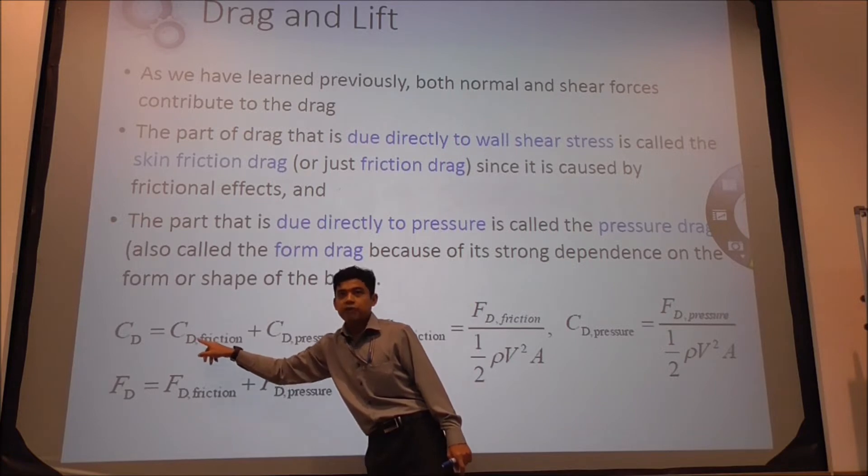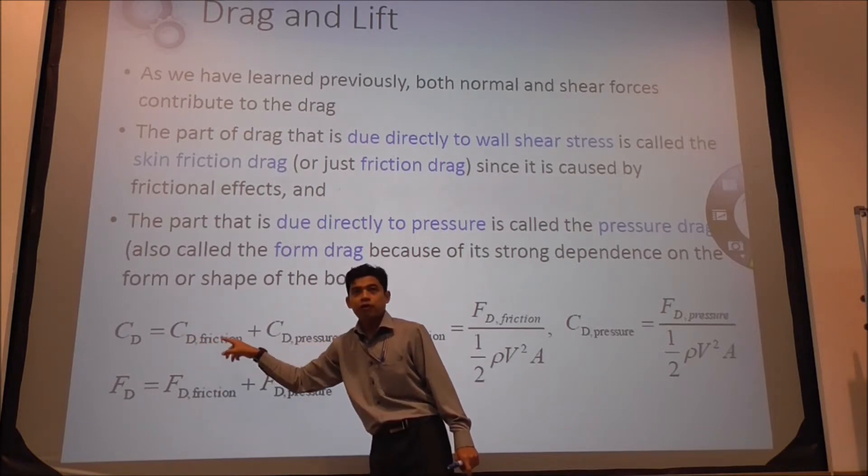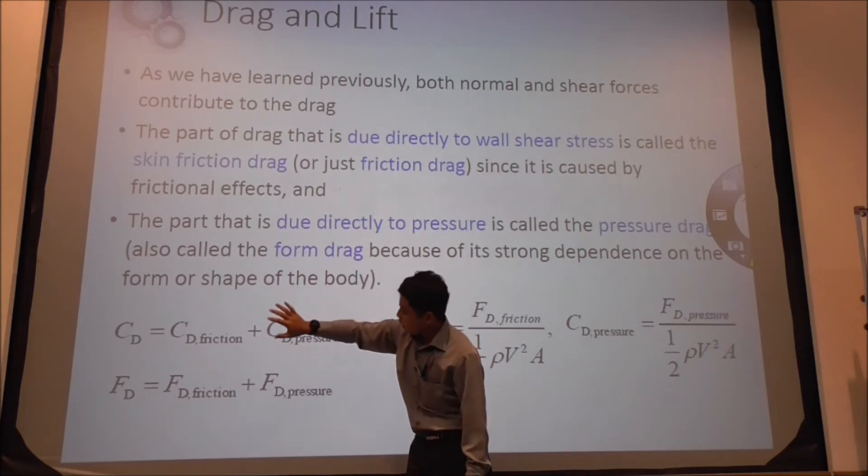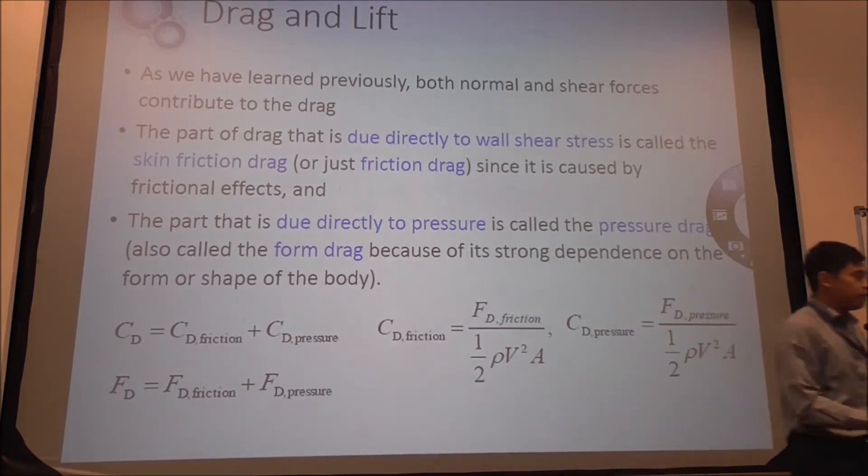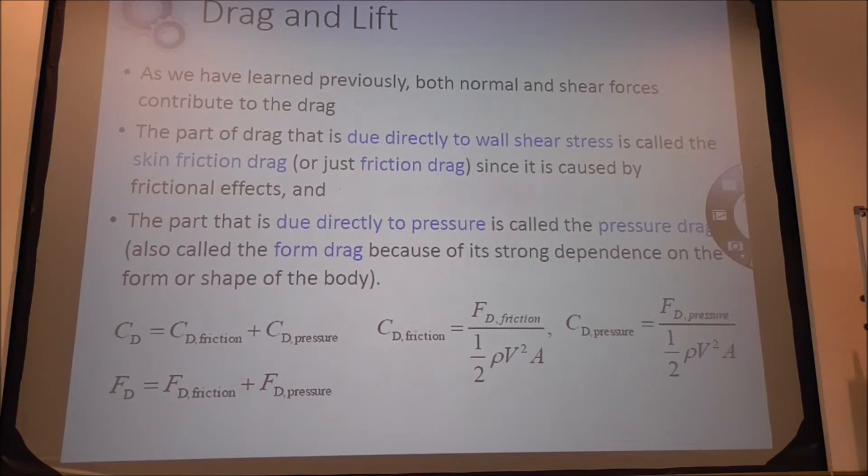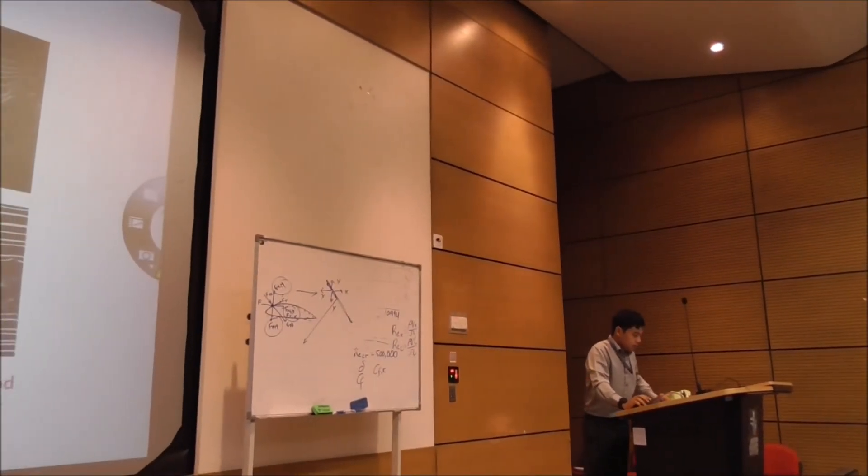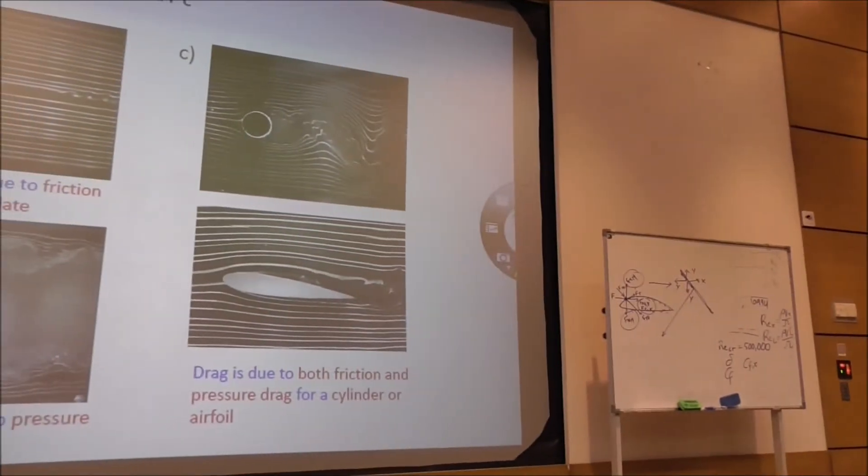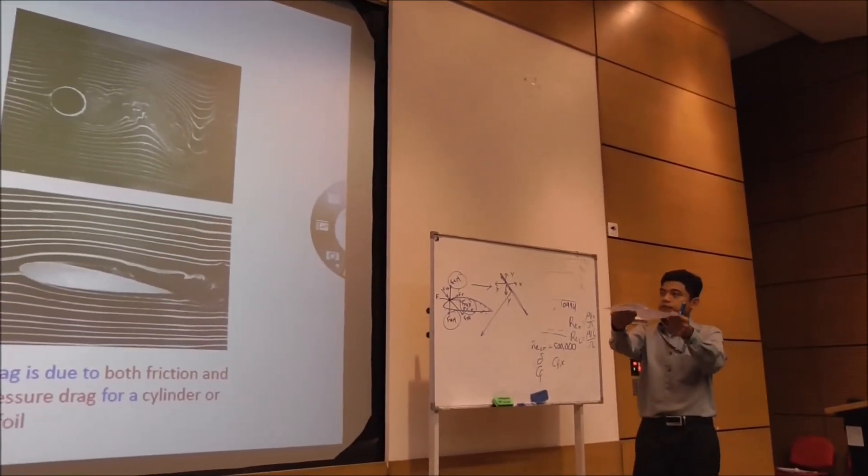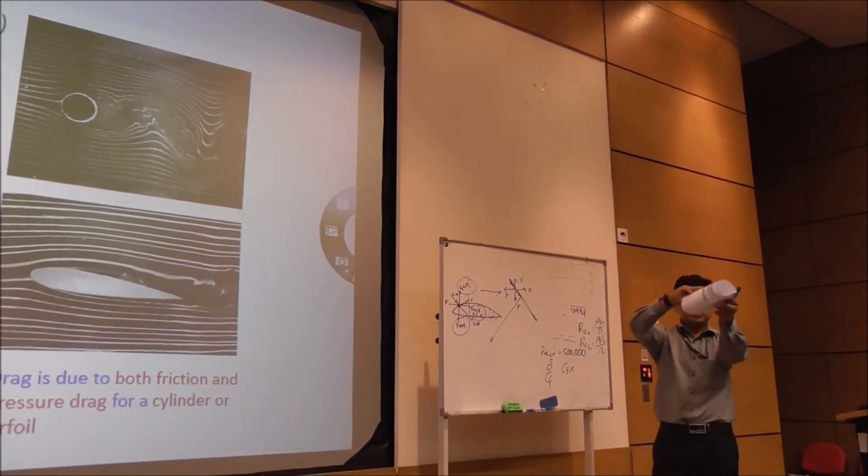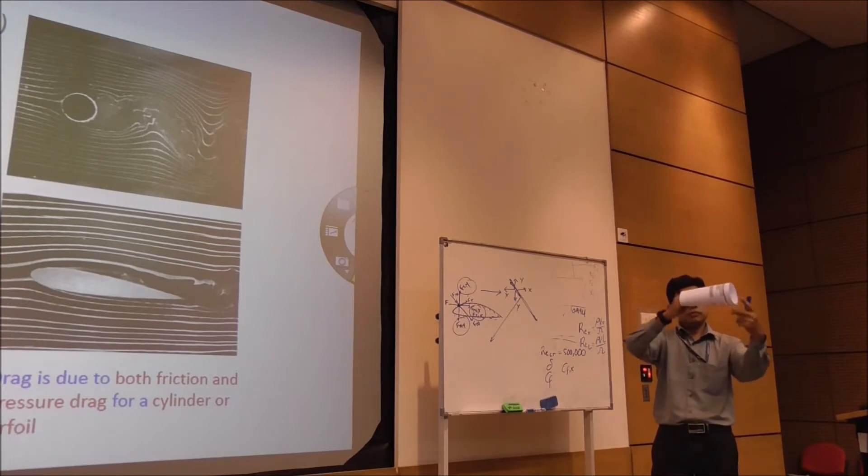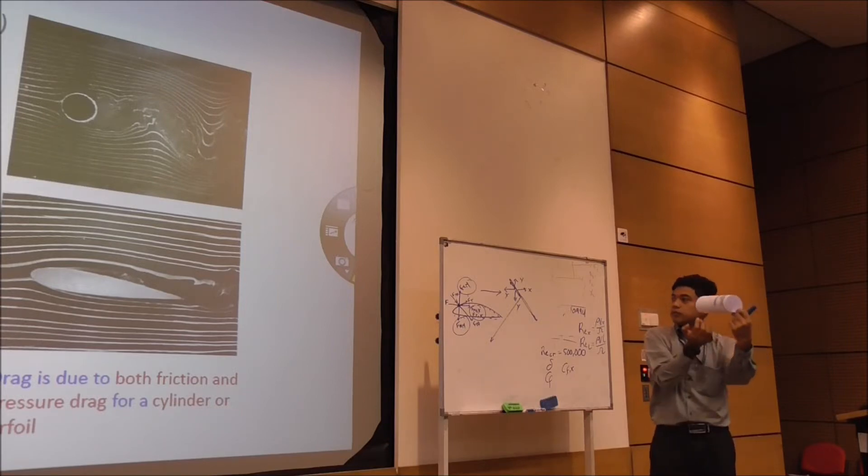Sometimes it is called CF, which is due to friction, the skin friction drag. This is the area of the area of your body. So this is the difference: when you have the power, it will be due to friction. When you have this, it is due to the normal pressure. When you have this, then you have both pressure and friction.